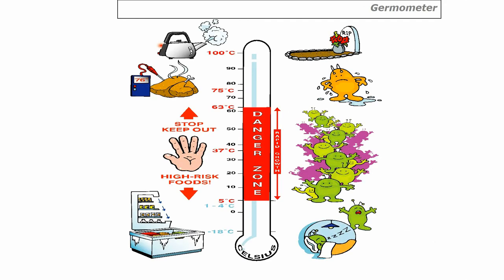Now let's look at the temperature danger zone — you will need to know these temperatures. On a thermometer showing freezing point at minus 18 degrees up to boiling point at 100 degrees Celsius: at minus 18 degrees C (freezer temperature), bacteria will survive — they won't die by freezing; they go into hibernation. Refrigeration temperature is 1 to 4 degrees C. The temperature danger zone starts at 5 degrees C up to 63 degrees C.